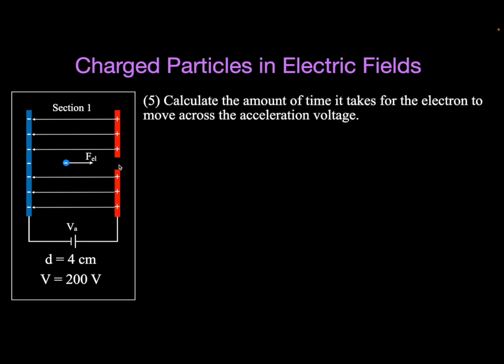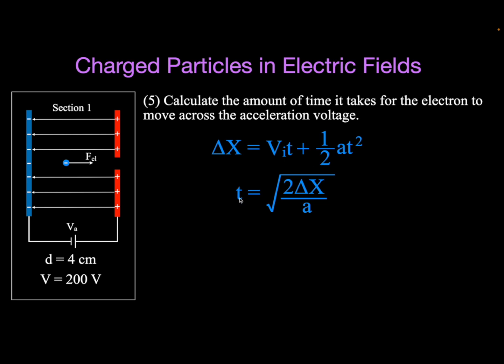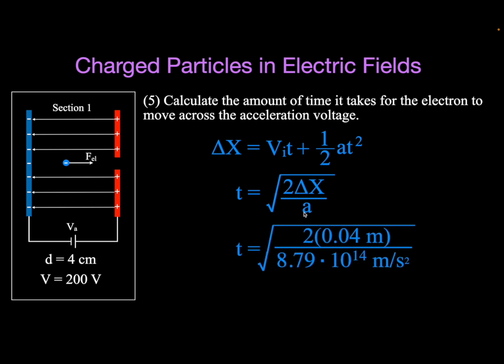Now we're going to calculate the time using the kinematic equation: delta x equals initial velocity times time plus one-half at squared. Since the initial velocity is zero, we simplify to delta x equals one-half at squared. Solving for time: t equals the square root of 2 delta x divided by A. The time is 2 times 0.04 divided by the acceleration we calculated earlier. The time it takes for that particle to travel across those 4 centimeters is 9.54 times 10 to the minus 9 seconds.